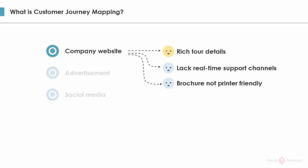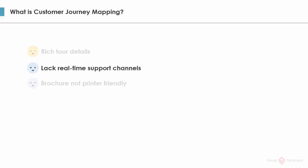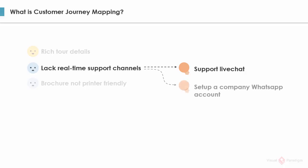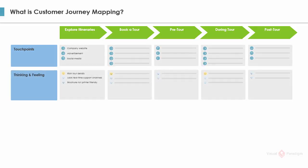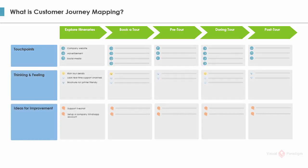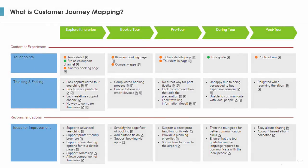Finally, based on these findings, I can think of the possible solutions. Since the potential customers want real-time support, we may consider supporting a live chat function, as well as setting up a company WhatsApp account. By putting together the stages, the touch points, customer thinking and feelings, and ideas for improvement together, a map is formed — and this is a customer journey map.